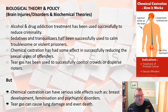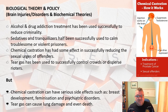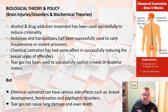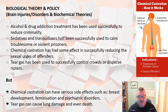That gives you an idea of how biological theory has informed policies on tackling crime and dealing with offenders. You can choose any of those examples if you get a question on biological theory and policy. Next up will be individualistic theories and how they've influenced policy. Take care, goodbye.